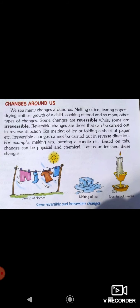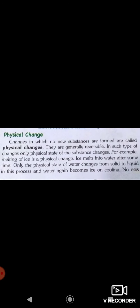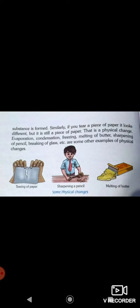Now, on the basis of reversible and irreversible, changes are categorized into two categories. The first is physical change. Changes in which no new substances are formed are called physical changes. They are generally reversible. In such changes, only the physical state of the substance changes. For example, melting of ice is a physical change — only the physical state of water changes from solid to liquid, and water again becomes ice on cooling. No new substance is formed. Similarly, if you tear a piece of paper, it looks different but it is still paper. Evaporation, condensation, freezing, melting of butter, sharpening of pencil, and breaking of glass are some other examples of physical changes.